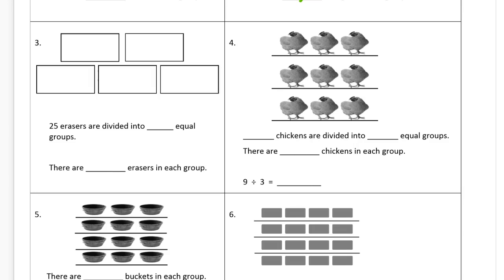Now we have for number 3, 25 erasers are divided into how many equal groups? 1, 2, 3, 4, 5 equal groups. And how many erasers are in each group? You've got to draw them. I'm just going to make sort of tally marks because there's going to be 25 of them and they're going to have to fit in these tiny groups. So for 25, I'm just going to do just like I did with the triangle.